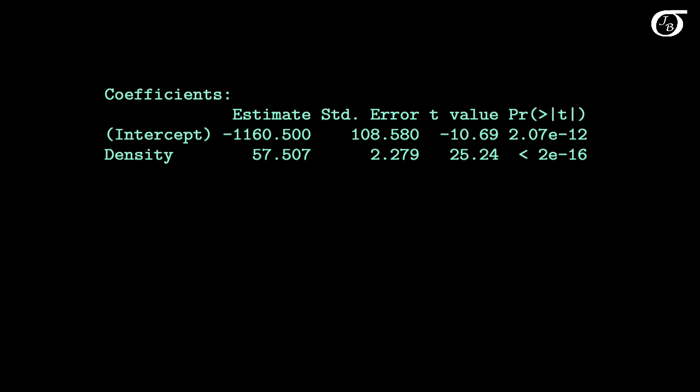Here's the output from the statistical software R. Other statistical software give very similar output to this. This first line is the intercept line, and this second line is the slope line, and it's labeled with the explanatory variable X.